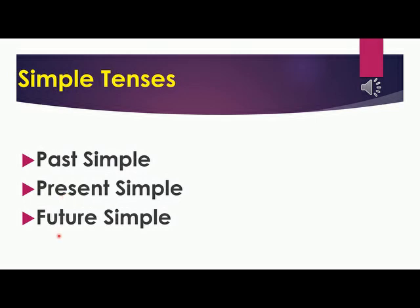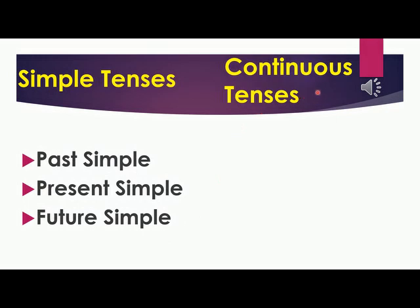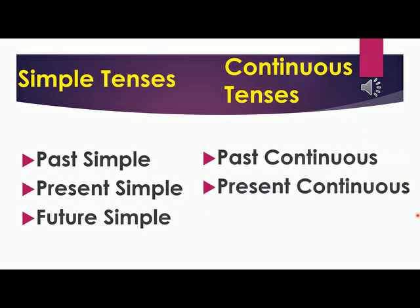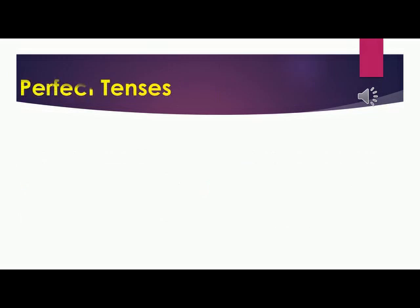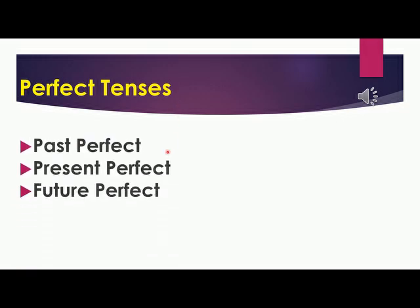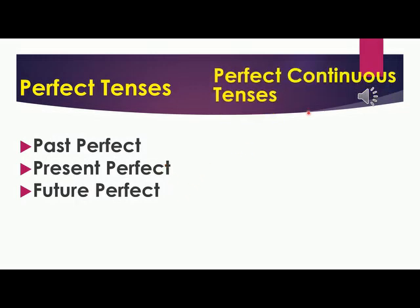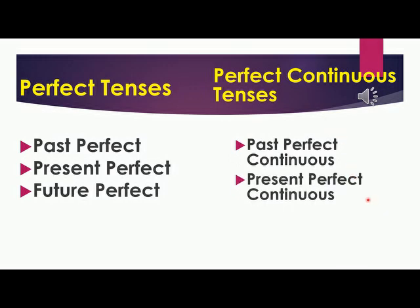In the same way, let's collect continuous branches: past continuous, present continuous and future continuous — three continuous branches. Now, let's collect the perfect tenses: past perfect, present perfect and future perfect. Similarly, let's collect perfect continuous tenses: past perfect continuous, present perfect continuous, and future perfect continuous.